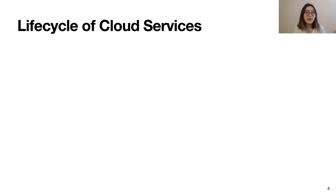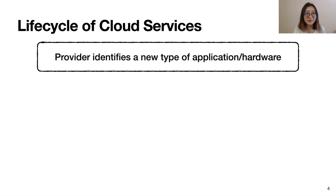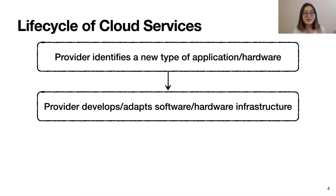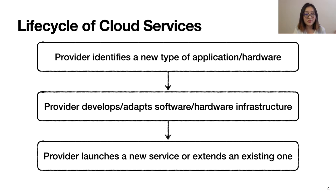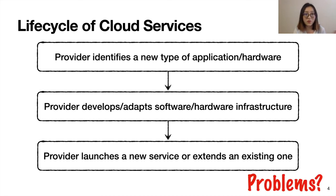If we look at the past 15 years, cloud computing has evolved following this common pattern. A cloud provider first identifies a new type of popular application or hardware. Then the provider develops software or hardware infrastructure for these trends. Finally, it launches a new service or extends an existing one. With the success of cloud computing, this model has been taken for granted.